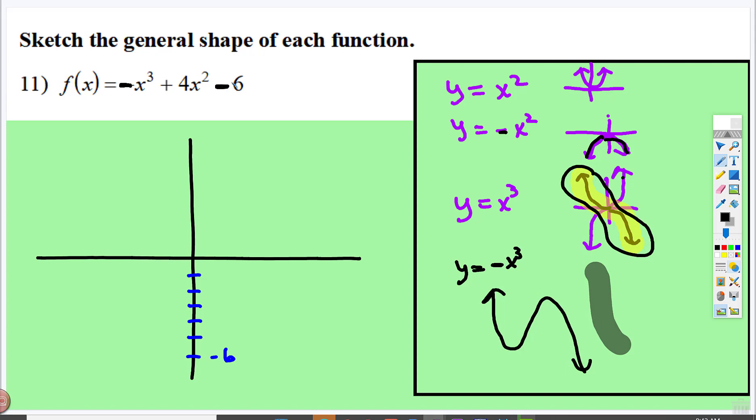What do we know about it? We know that it's going to be reflected over the x-axis, and we know it touches right down there at negative 6. I don't know very much else about it right now.